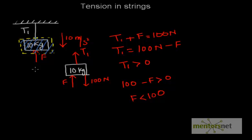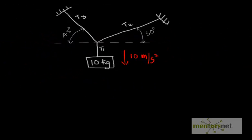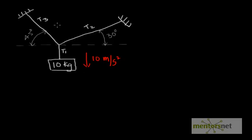So here we have seen the two things that are important. One, the direction in which we have to draw the tension. Two, the magnitude of the tension should always be positive. Now let's take a slightly more involved question.